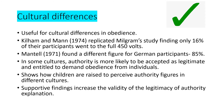A strength of legitimacy of authority is that it can explain cultural differences in obedience. Kilman and Mann in 1974 replicated Milgram's study, finding only 16% of their participants went to the full 450 volts. Mantell in 1971 found a different figure for German participants — 85%. In some cultures, authority is more likely to be accepted as legitimate and entitled to demand obedience, and children are raised to perceive authority figures differently across cultures. These are supportive findings that increase the validity of the legitimacy of authority explanation.